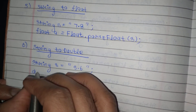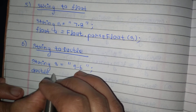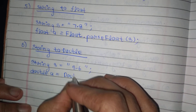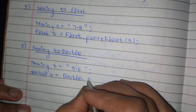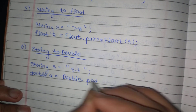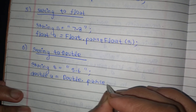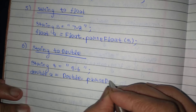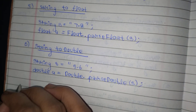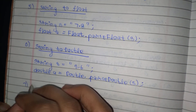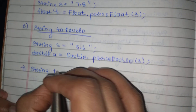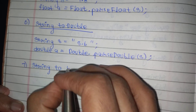Sixth: string to double. I will write double a is equal to Double — with capital D, as it is the wrapper class — dot parseDouble, and then s.